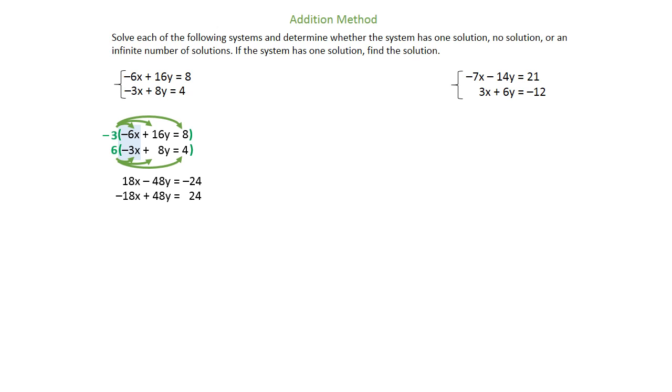Now the addition method means we're going to add these two lines together now that we've created some opposites in our x positions. Notice that the x's do cancel out just as we intended, but in this case the y's also cancel out, leaving us with nothing on that left-hand side. We're going to fill that space with 0 as a placeholder.